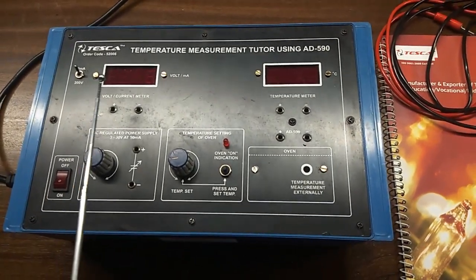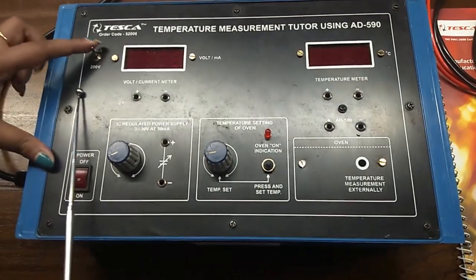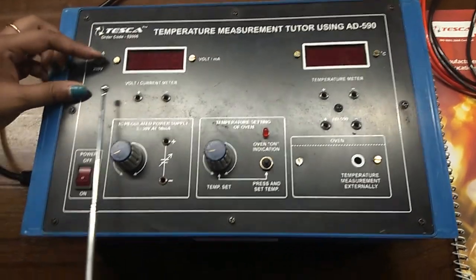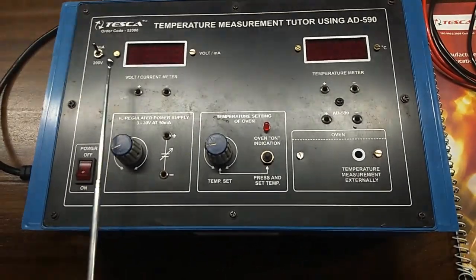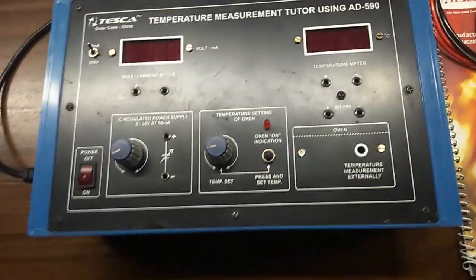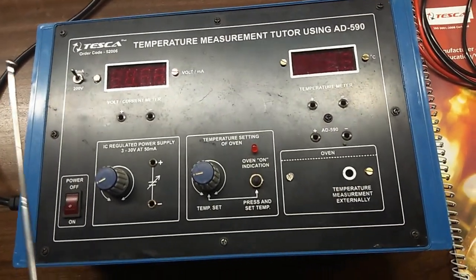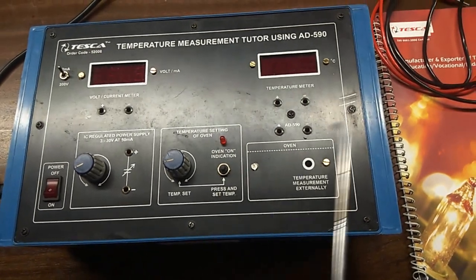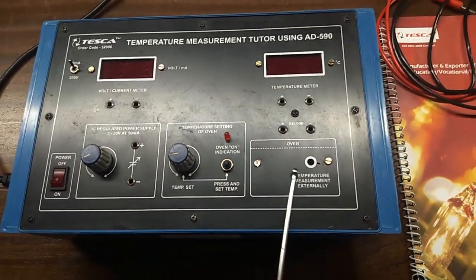This is the voltage plus current meter. Here is a switch to select voltage voltmeter or current meter. The range for voltage is 200 volts and for current meter the range is 2 milliampere. This is the temperature meter. This is AD-590.